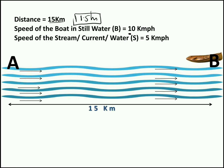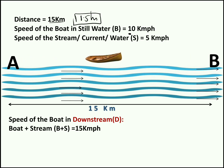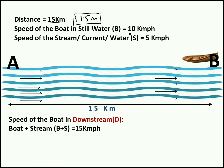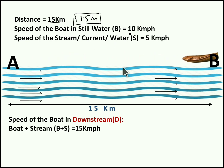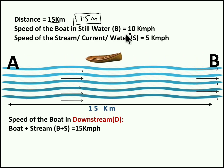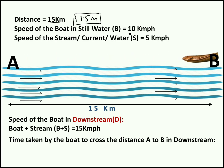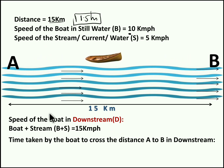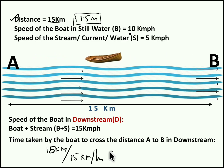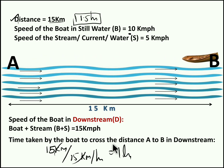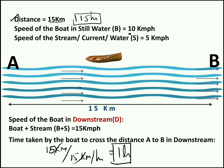As per our assumption, speed of the stream is 5 kilometers per hour. The boat needs to travel along the stream. When the boat travels along the stream — with the stream — we call it the speed of the boat in downstream. To find speed of the boat in downstream, we consider both boat speed and stream speed: 10 plus 5 is 15 kilometers per hour. The time taken by the boat to cross from A to B in downstream is 15 km divided by 15 km/h, which equals 1 hour.